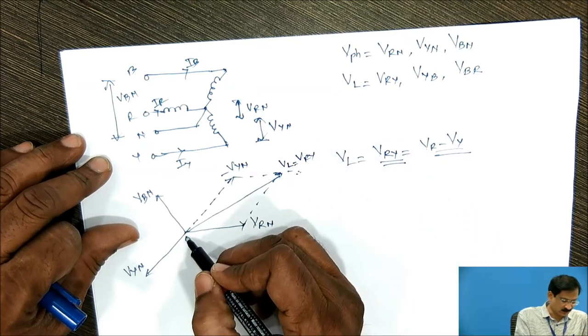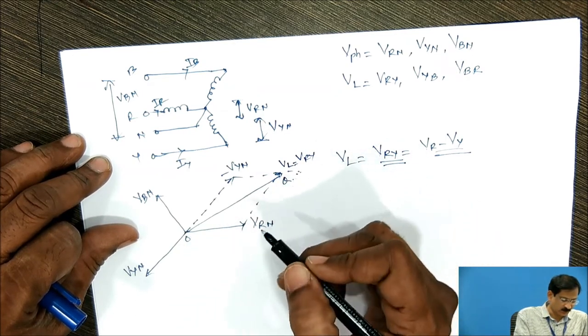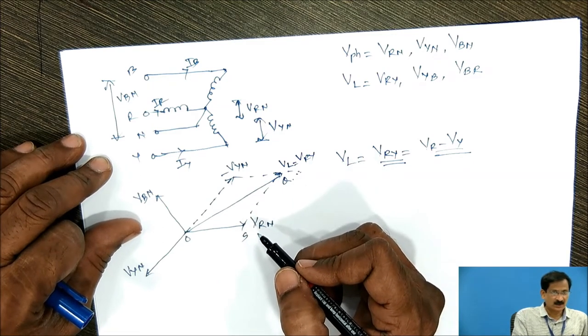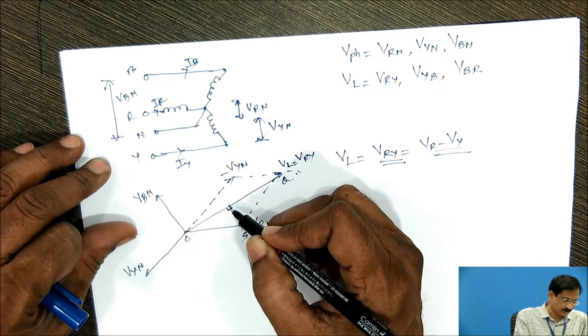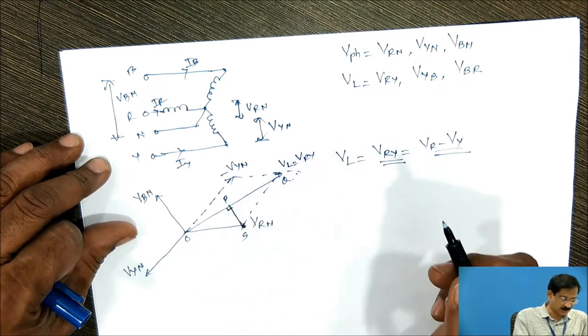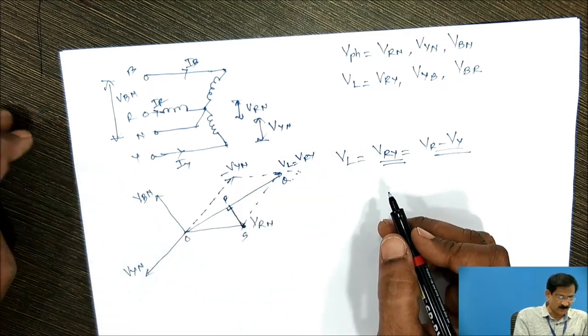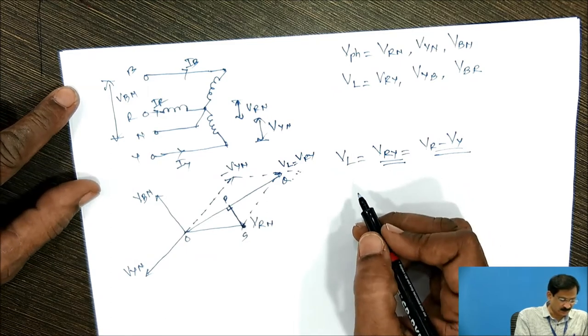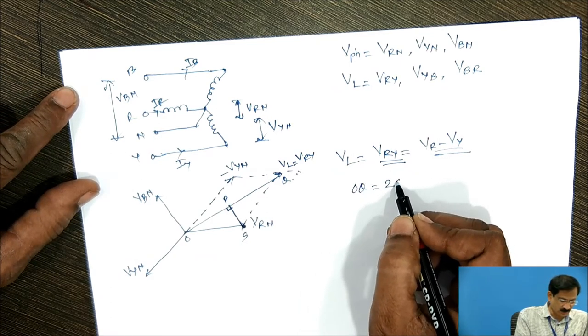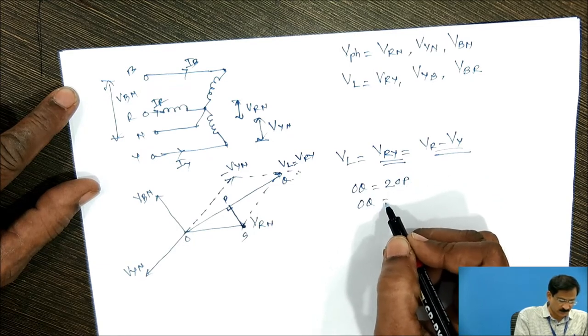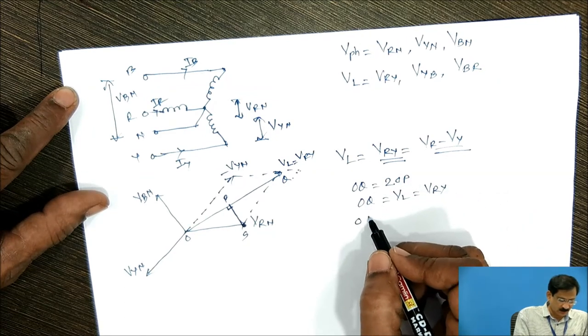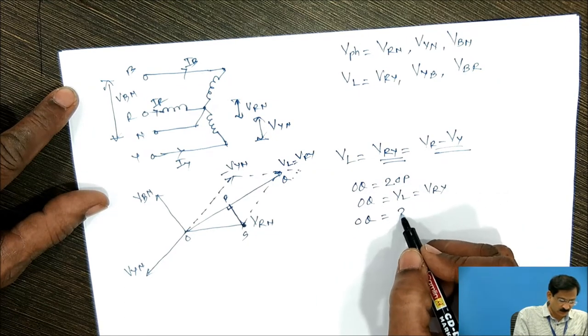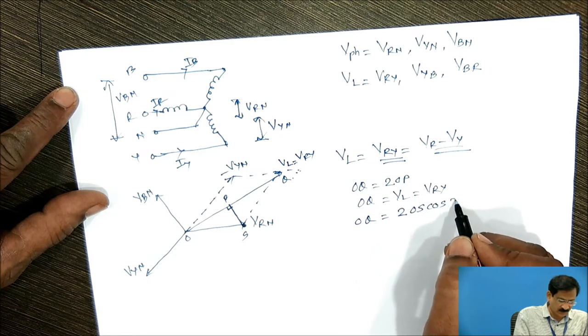Now, let us denote O, this point Q, this point S. Let us draw a perpendicular from point S, a perpendicular SP on line OQ. This is, say, P. From the geometry, OQ is equals to two times OP, where OQ is equals to VL or VRY. OQ is equals to two times OP equals to OS cos of 30 degree.